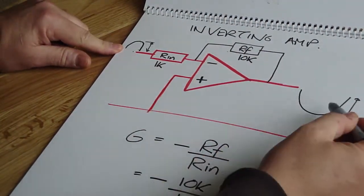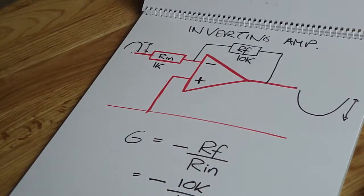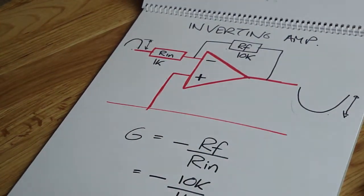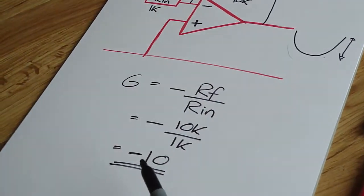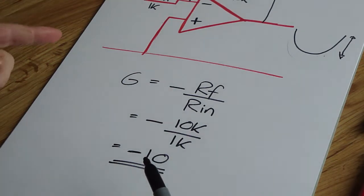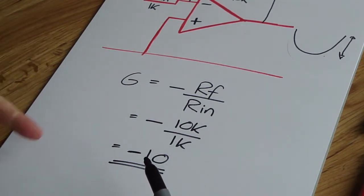If that was a tenth of a volt, that would be 1 volt. So it's actually amplified it and made it bigger, but because it's on the inverting pin, it's flipped it upside down. That's using an amplifier with a feedback resistor on the inverting pin.